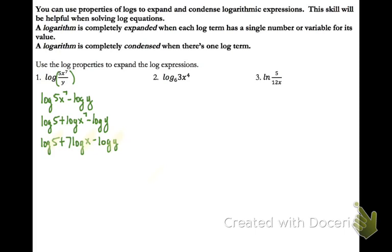For number 2, look at the value and ask what is affecting all of those terms — multiplication. So we rewrite multiplication as a sum. The first expression is now expanded, but the second one has a power. So we rewrite that as multiplication, pulling the 4 out to the front, and then that one is expanded.